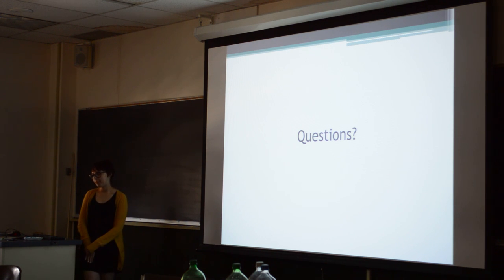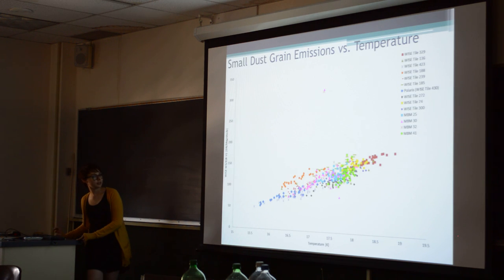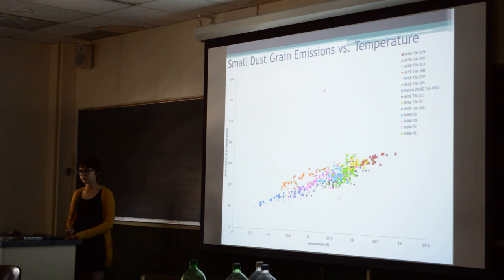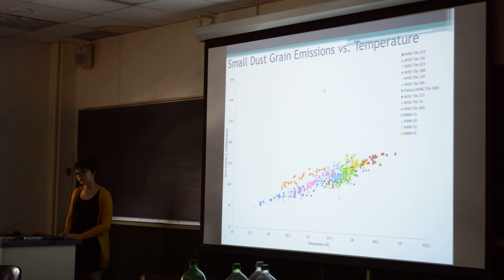An audience member notes being struck by the results in the first graph of normalized intensity as a function of temperature — that a small change in temperature gave a doubling or tripling of the normalized intensity, and asks why that is. The presenter explains that as the energy density goes up, there are more UV photons available for absorption, which drives the increased small dust grain emission.